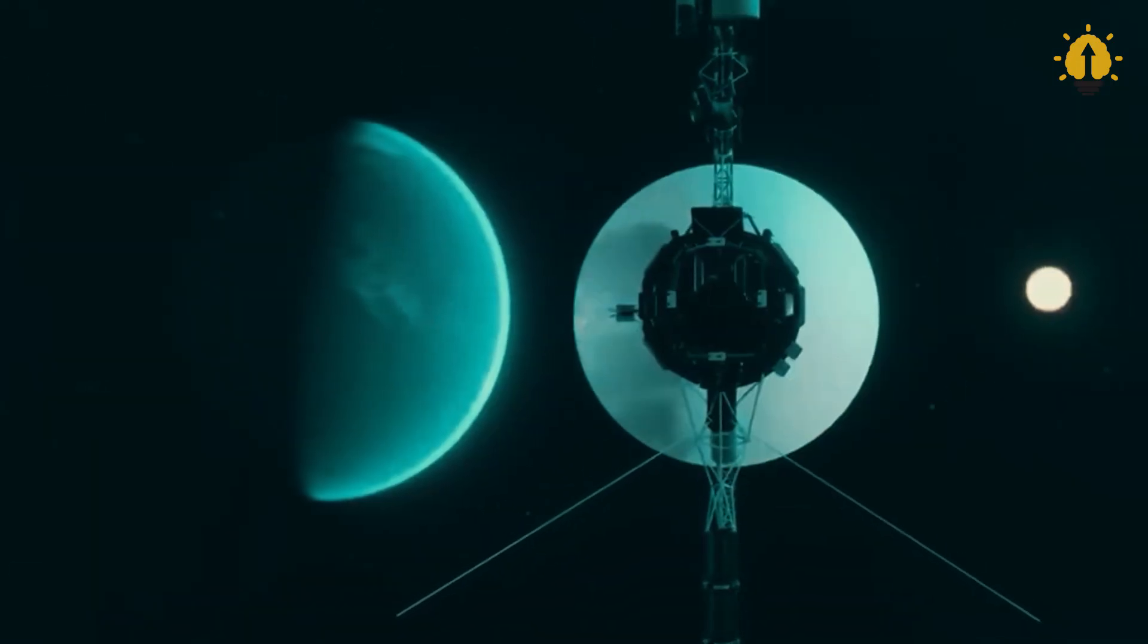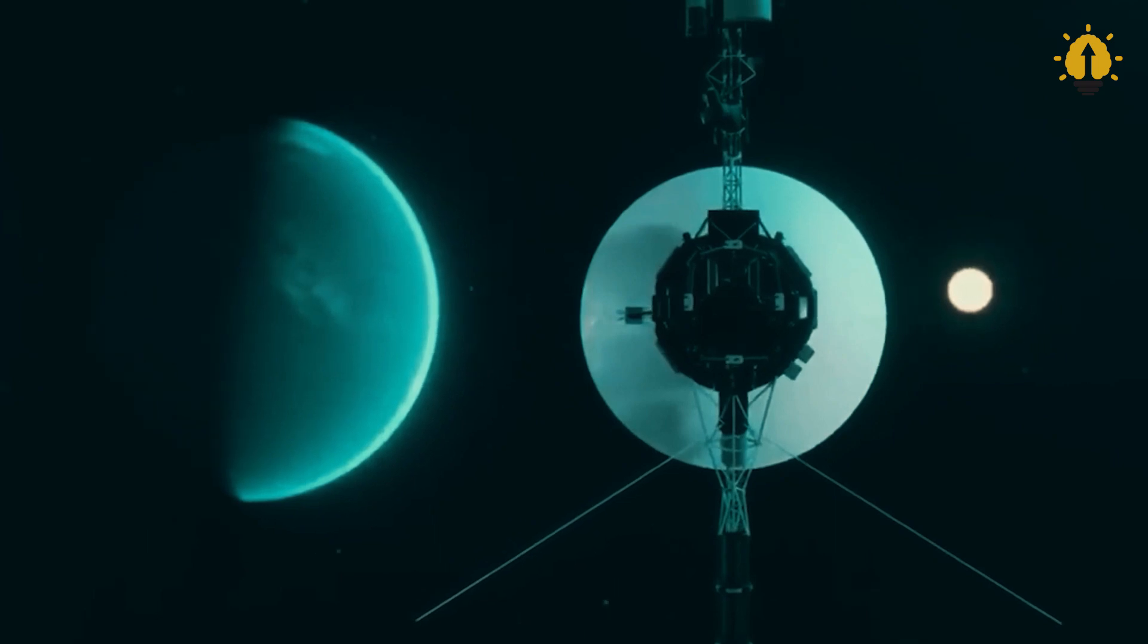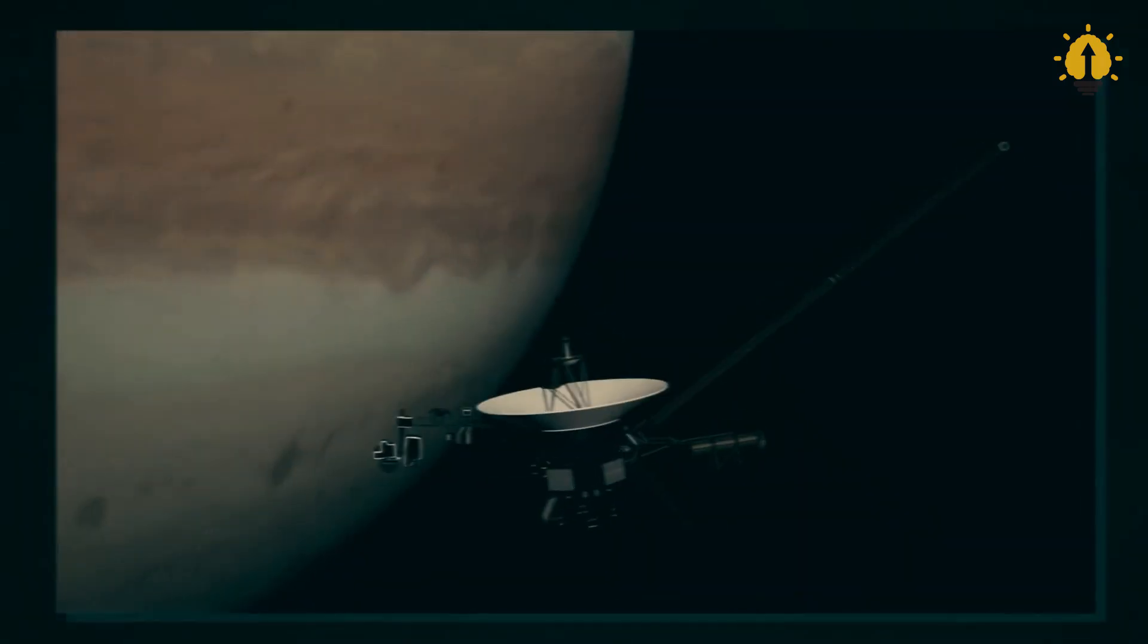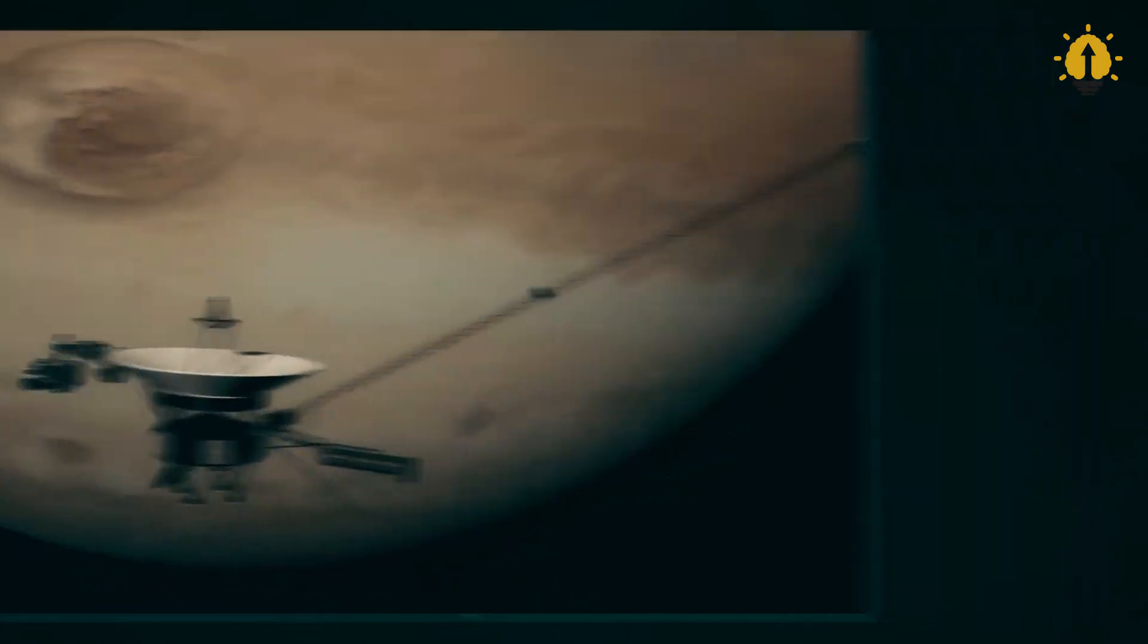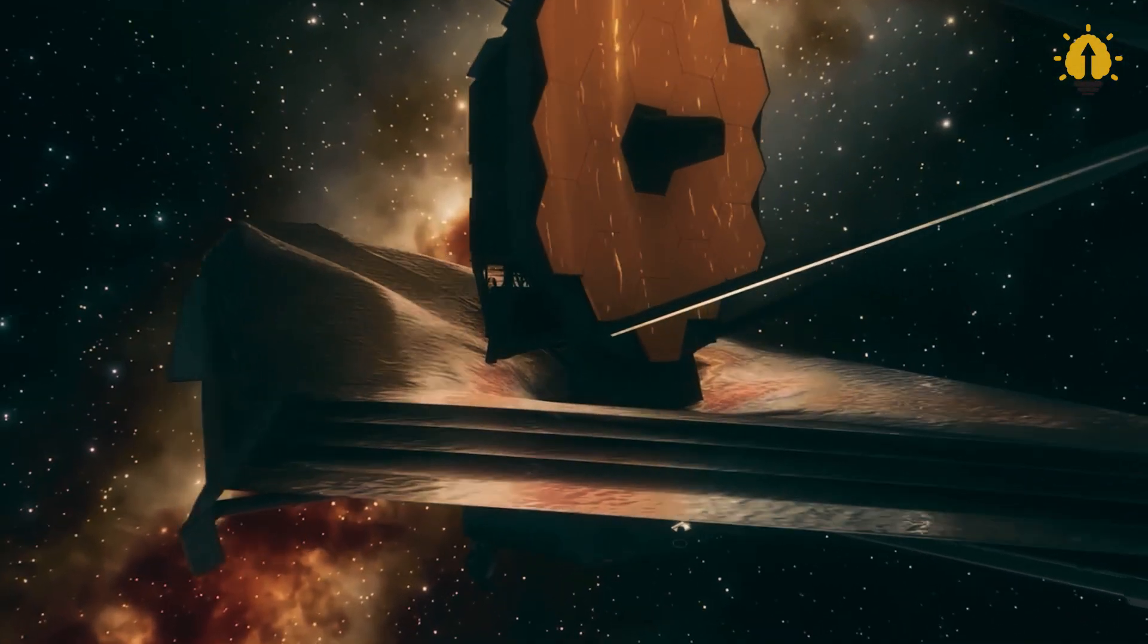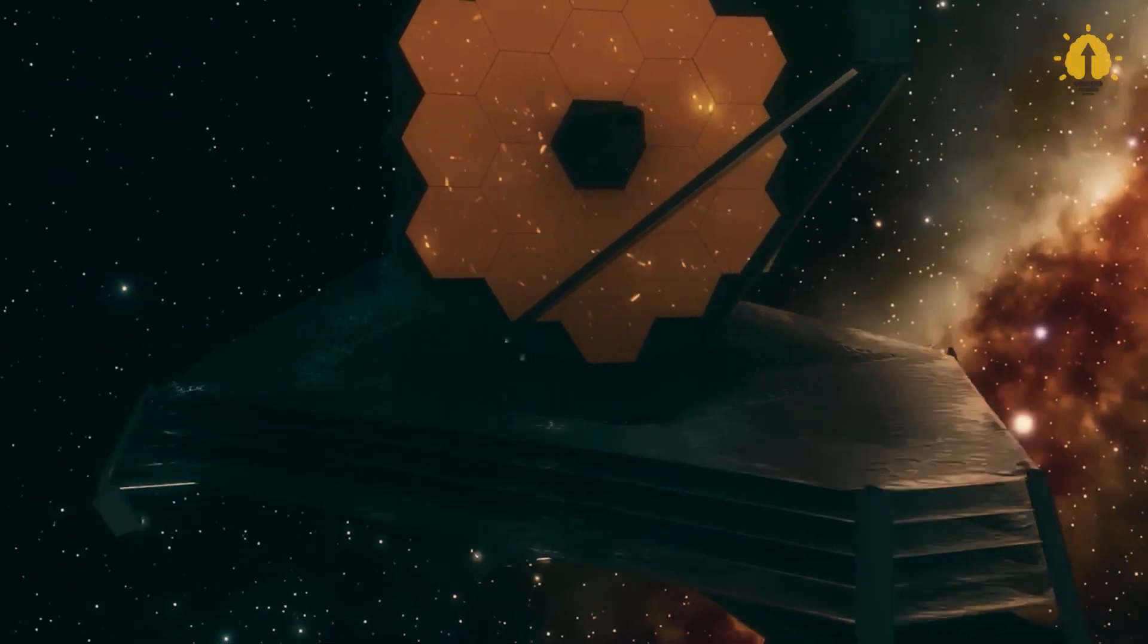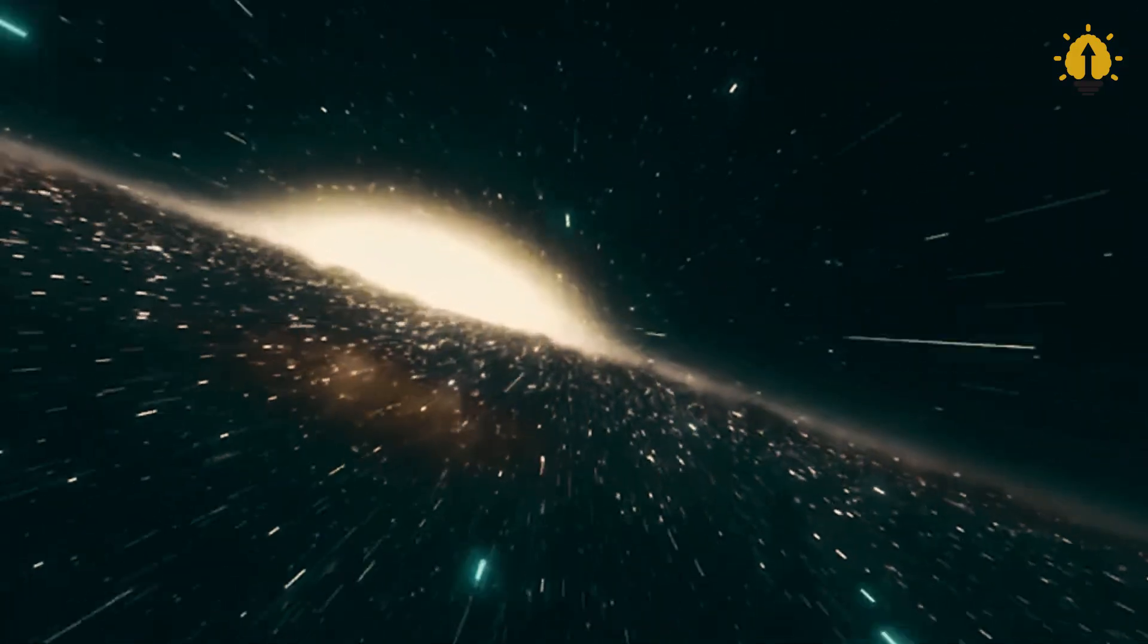A spacecraft the size of Voyager 2 would need an amount of fuel equivalent to more than 10 times its weight to carry out the braking process, which would take between one and two months. Yes, just as you hear, if in a car race when braking, these continue to advance a few meters. In space, the ships continue to advance several thousand kilometers after starting to brake.